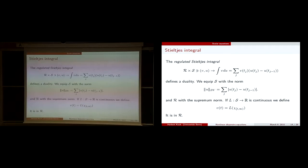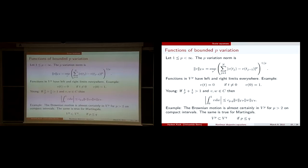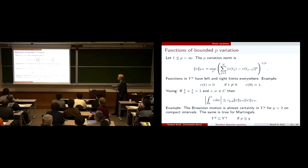What are functions of bounded p-variation? P-variation is defined as follows: take a partition, sum over the jumps to the p-th power, take the 1/p power, and take the supremum over all partitions — that's the p-variation. These functions have left and right limits everywhere, so we stay in the context of regulated functions.